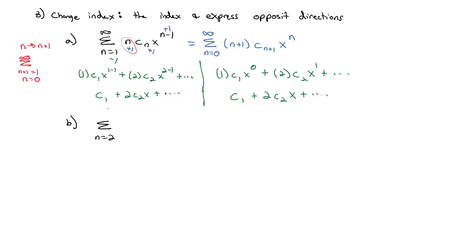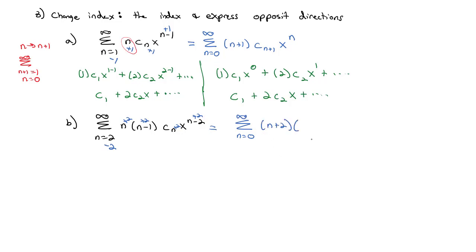Take the sum as n goes from 2 to infinity of n(n−1)·c_n·x^(n−2). We want to shift this down to start at n = 0. That means subtracting 2 from the index and adding 2 to every n in the expression, giving the sum from n = 0 to infinity of (n+2)(n+1)·c_(n+2)·x^n — an equivalent expression starting at a different index.